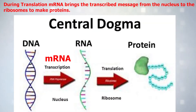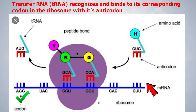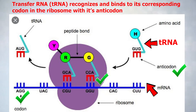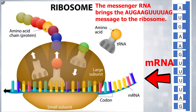And this leads us into translation, which is our final process of protein synthesis. During translation, the mRNA brings the transcribed message from the nucleus to the ribosome to make proteins. The message that mRNA is carrying is read in threes by the ribosome — this three-nucleotide message is called a codon. Another type of RNA called transfer RNA, or tRNA, recognizes and binds to its corresponding codon in the ribosome with its anticodon. The tRNA then retrieves the matching amino acid from the cytoplasm to add to the end of the growing amino acid chain. The messenger RNA brings the AUG, AAG, UUU, UAG message to the ribosome.